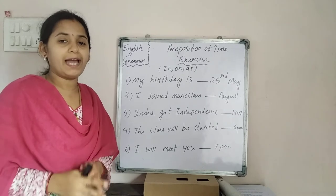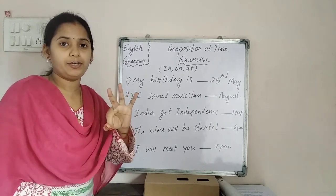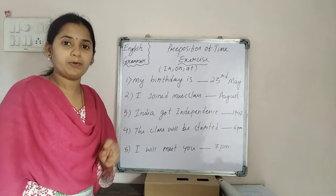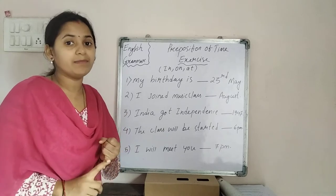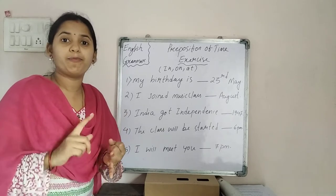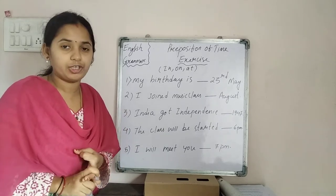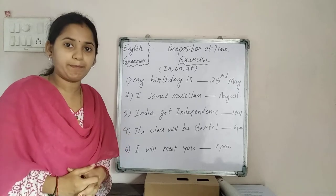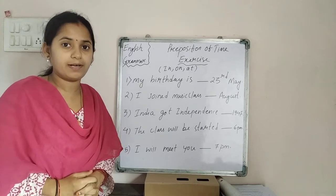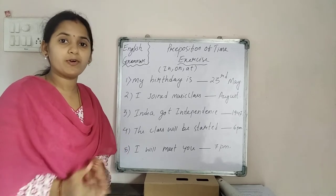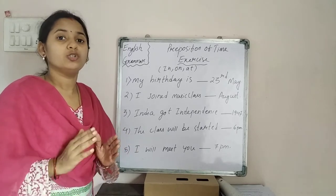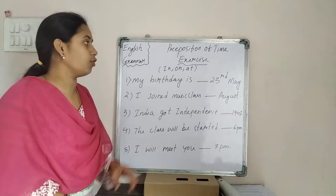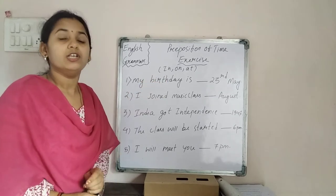Prepositions are divided into three types: preposition of time, preposition of place, and preposition of direction — these are the basic prepositions. Already we have discussed all these things, so today we will go for questions based on preposition of time.